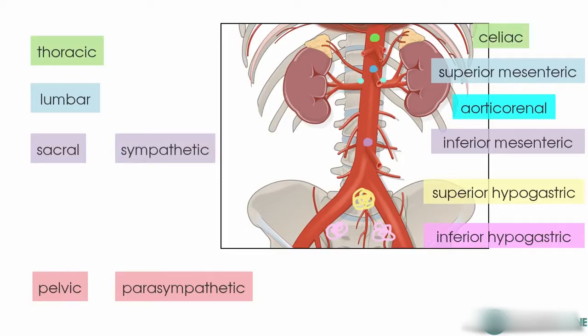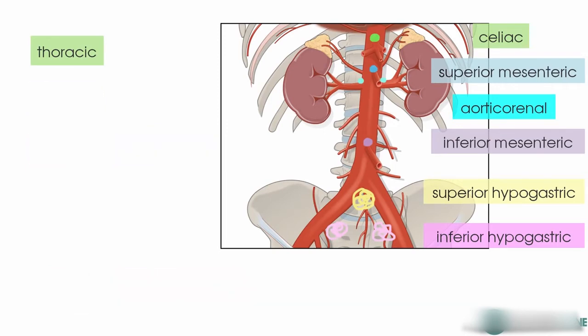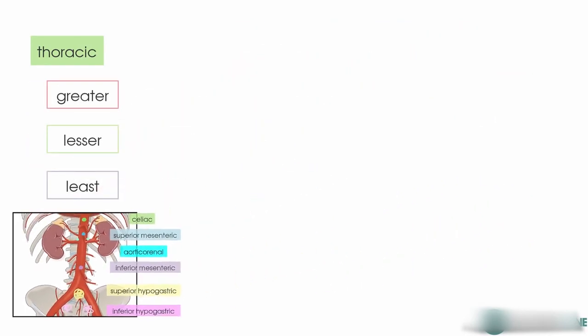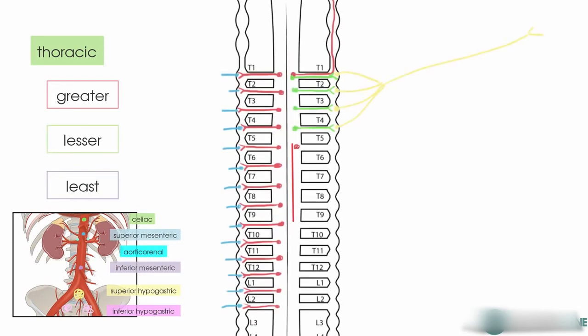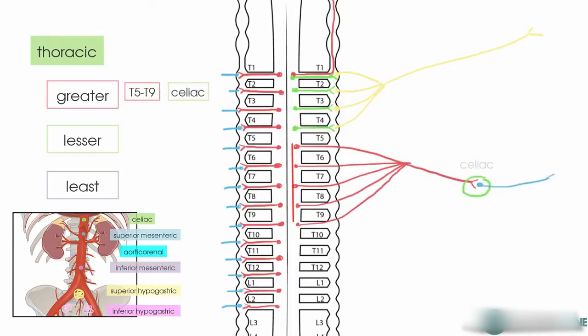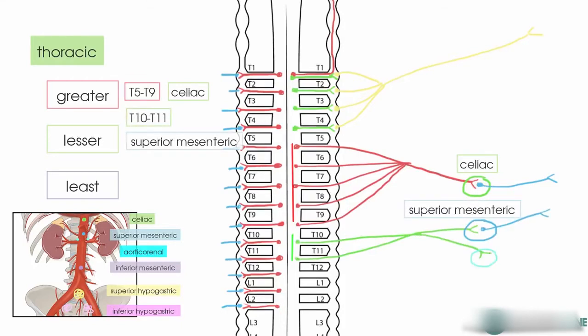Coming back to the thoracic splanchnics, these are divided into the greater, the lesser, and the least. The greater thoracic splanchnic nerve arises from T5 to T9 and it synapses in the celiac ganglia. The lesser thoracic splanchnic arises from T10 to T11 and this synapses in the superior mesenteric and the aorticorenal ganglia. The least splanchnic nerve arises from T12 and synapses in the aorticorenal ganglia.